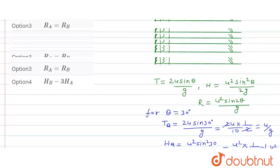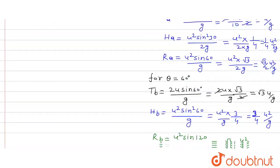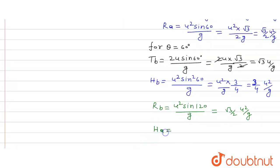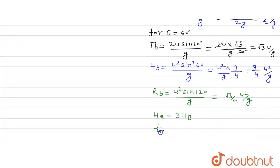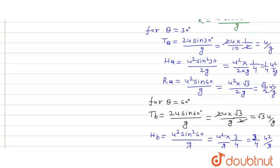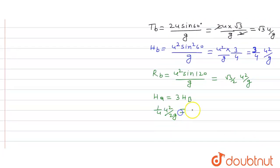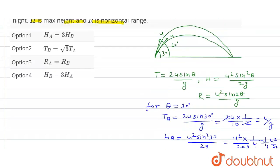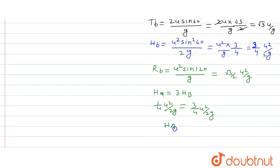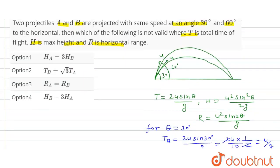Now comparing the options: the first option says hA equals 3 hB. We have hA equal to 1 over 4 times u squared over 2g, and hB equal to 3 over 4 times u squared over 2g. Checking 3 times hB gives 3 over 4 times u squared over 2g, but hA is only 1 over 4. So hA does not equal 3 hB — this first option is incorrect. But wait, we have to find the incorrect option.